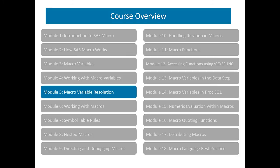Module 5 Macro Variable Resolution considers how Macro Variables are resolved and looks specifically at a number of techniques such as Multi-pass Resolution. Module 6 Working with Macros describes how to define and then execute a SAS Macro. We will also look at using the different types of Macro Parameter to pass values into the Macro. Module 7 Symbol Table Rules takes a detailed look at the use of SAS Macro Symbol Tables and how to avoid the potential pitfalls.